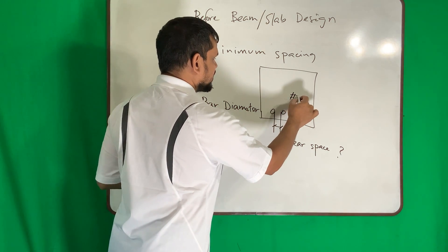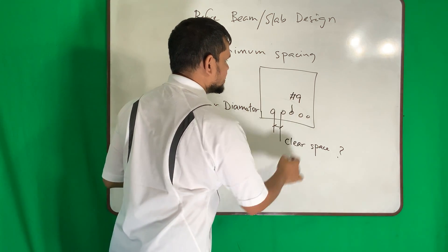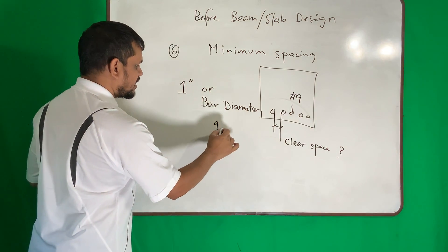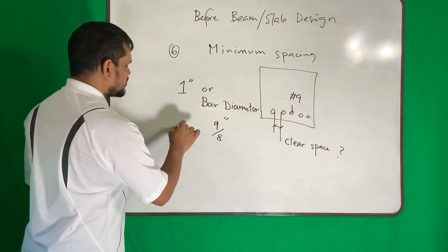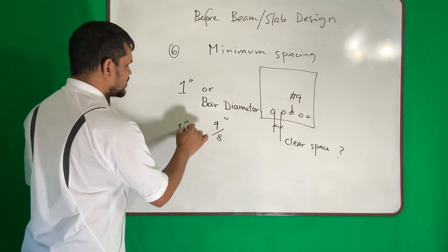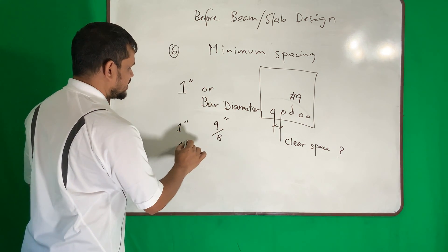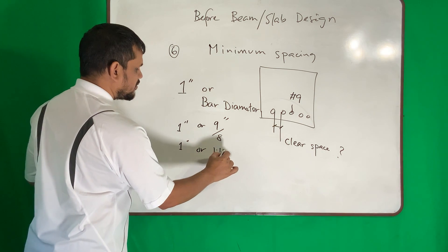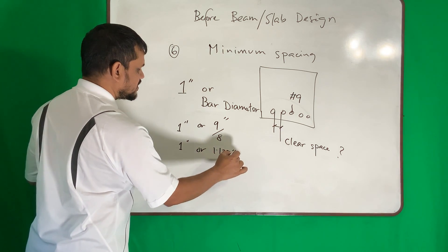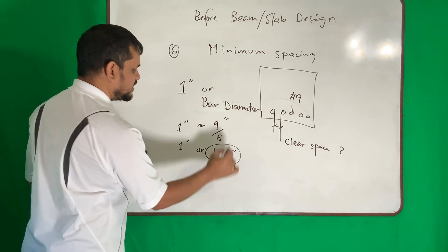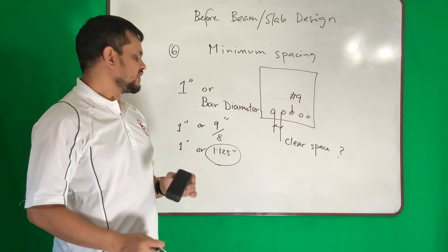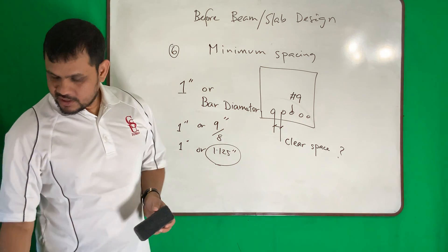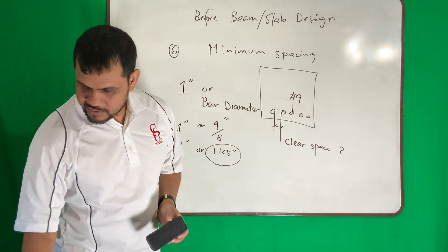For example, if your bar is number 9, the diameter is 9/8 inch = 1.125 inches. Since 1.125 inch is greater than 1 inch, the minimum clear spacing for that case would be 1.125 inches.